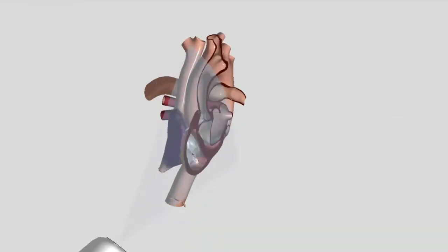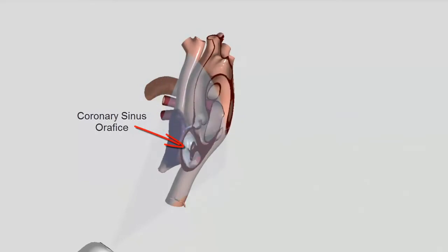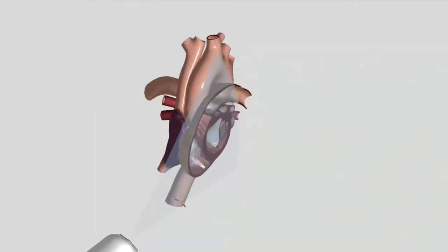Now we can see here the opening of the coronary sinus, and we're going to follow this around as we see where the outflow of the great cardiac vein begins.